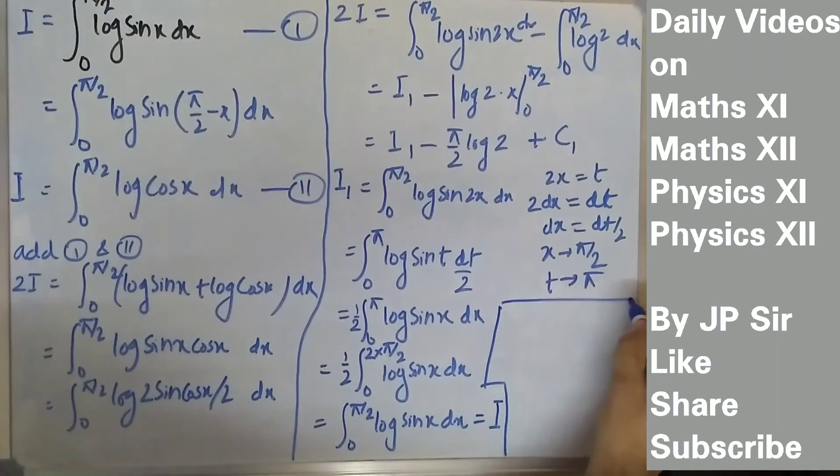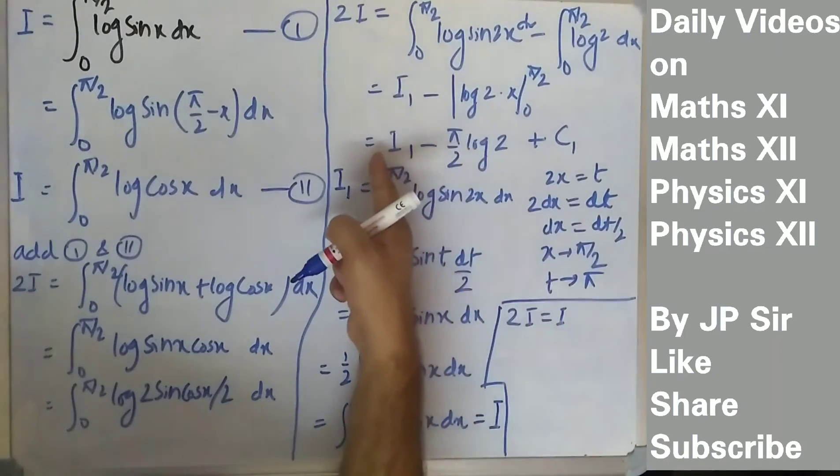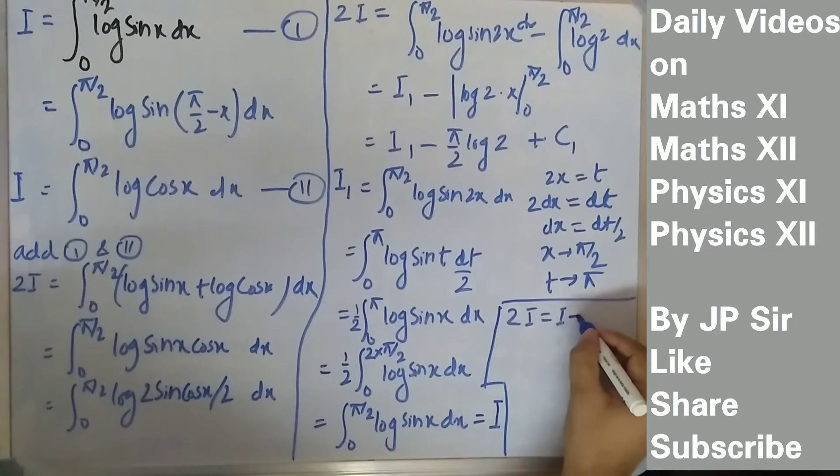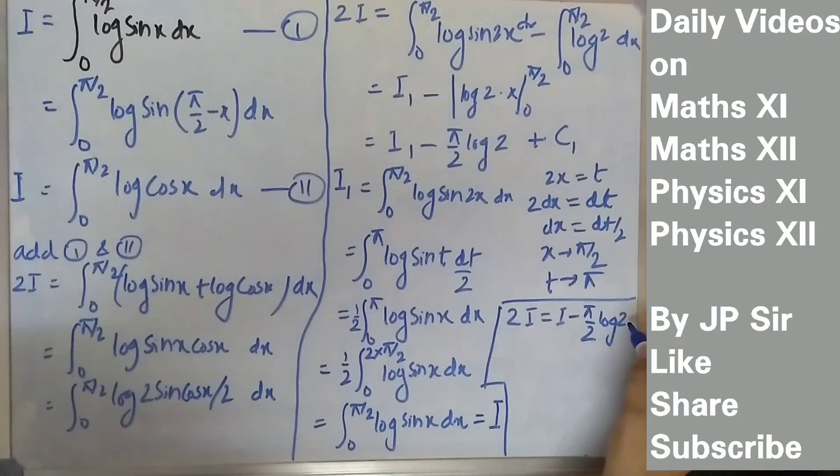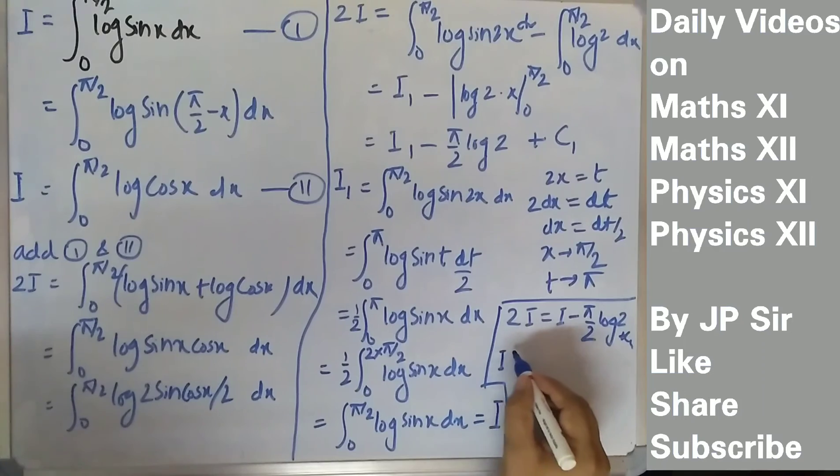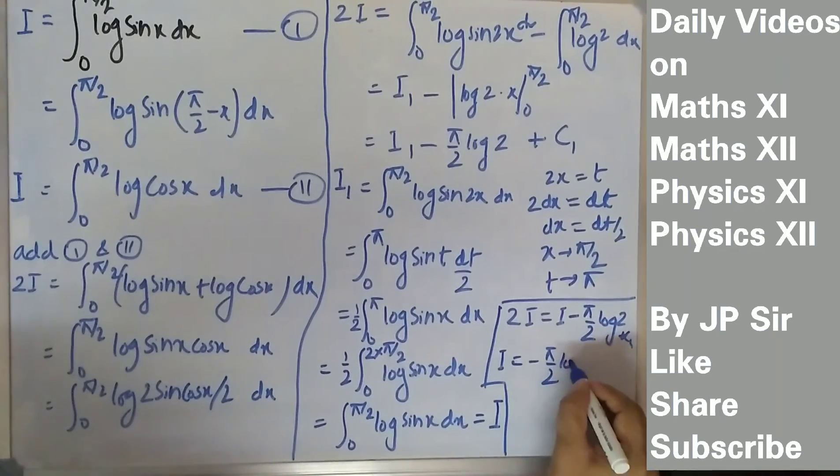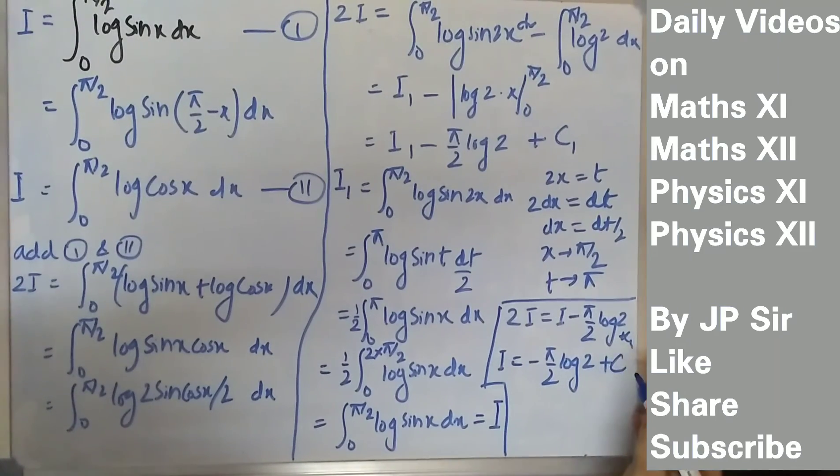A final few steps: 2I equals, in place of i1, I'll write I minus pi by 2 log 2 plus c1. And this I will come to this side, so I equals minus pi by 2 log 2 and finally this constant integration sign I'll write just as c. So this is the final answer.